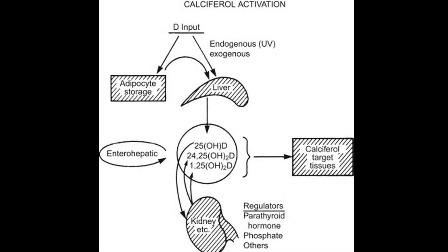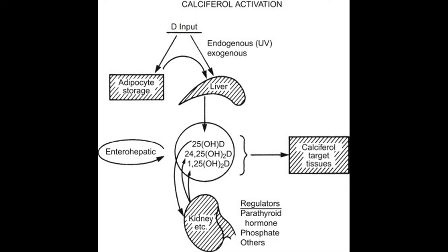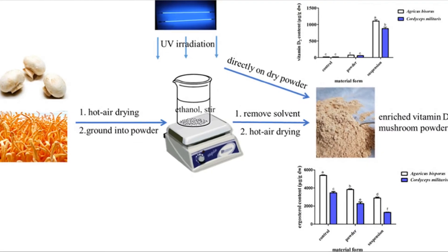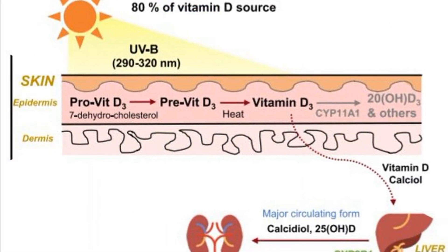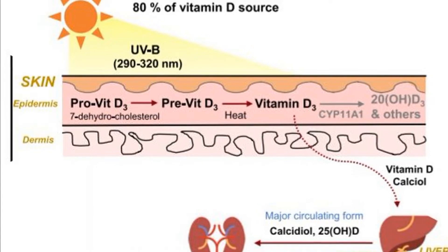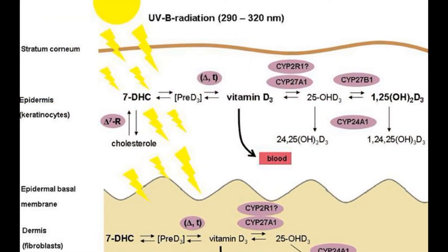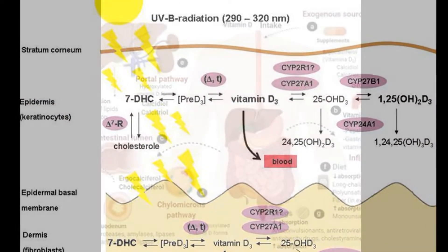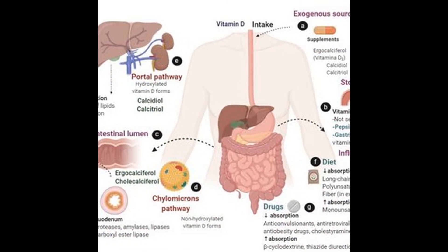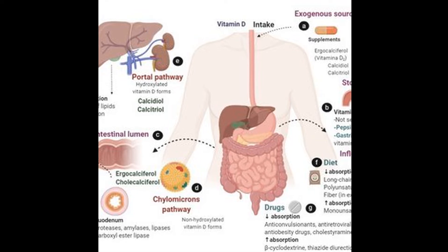Vitamin D2 is formed when herbosterol found in plants is exposed to ultraviolet rays. Vitamin D3 is the chief form occurring in animal cells and develops in the skin on exposure of 7-dehydrocholesterol to ultraviolet rays from sunshine. Dietary vitamin D is absorbed along with food fats from the intestine, and bile salts are essential for effective absorption.